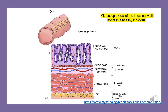This slide shows a microscopic view of the intestinal wall layers in a healthy individual. The most superficial layer is the mucosa, which has the epithelial cells. The next layer is the muscularis mucosa, which contains the muscle fibers. Right below it is the submucosa, with blood vessels and lymphatic cells around it. Beneath that is the muscularis propria, containing muscle fibers. The fat is in the subserosal adipose tissue, and the deepest layer is the serosa.